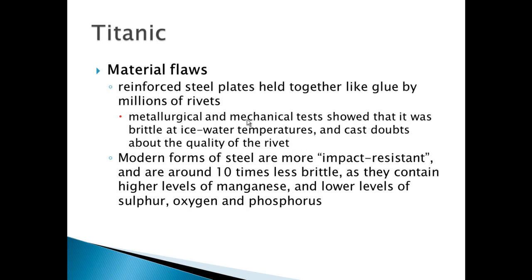Modern forms of steel are more impact-resistant and around 10 times less brittle, as they contain higher levels of manganese and lower levels of sulfur, oxygen, and phosphorus. From the lessons of the Titanic, it became quite evident that more impact-resistant steel was needed, and a lot of research went into how to make steel more impact-resistant and less brittle, resulting in these kinds of material combinations.